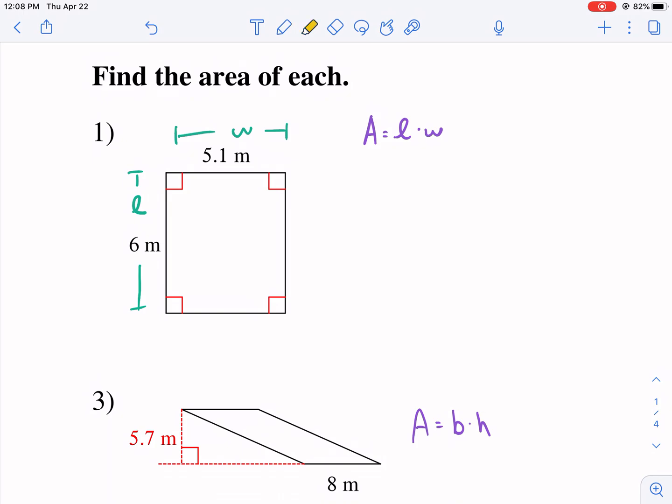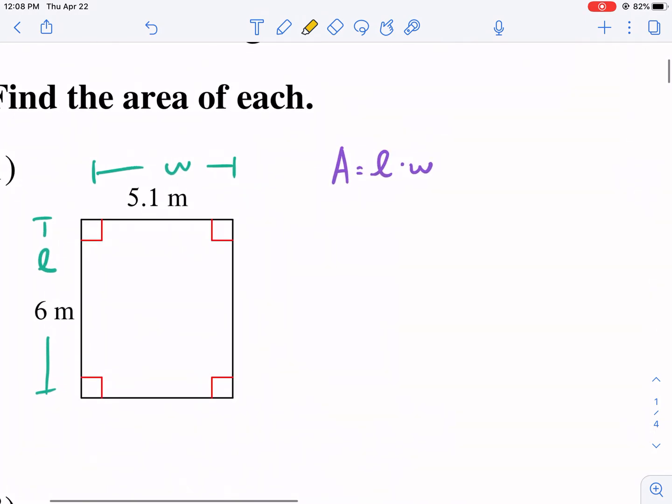Most people just decide to call the length the longer of the two just to stay consistent. It makes it easier for them to remember in the future. So we're just going to go ahead and multiply these two together. It's fairly simple here. So our area is going to be equal to 6 times 5.1.